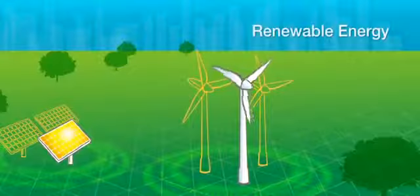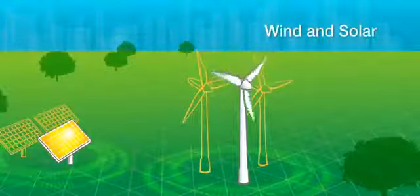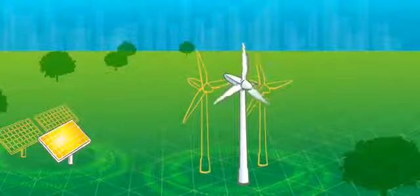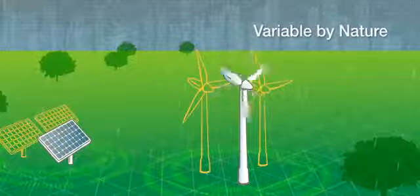Renewable resources such as wind and solar are a sustainable and growing source for electric power. However, renewable power sources are variable by nature and add complexity to normal grid operations.